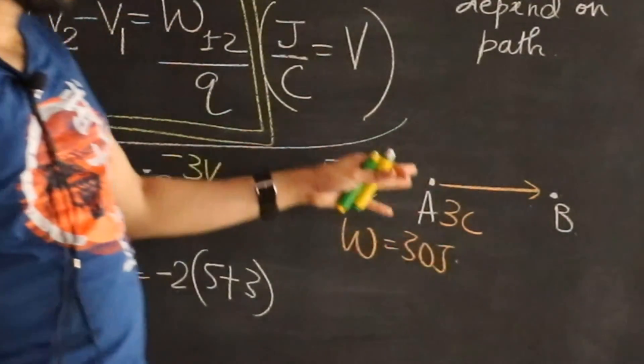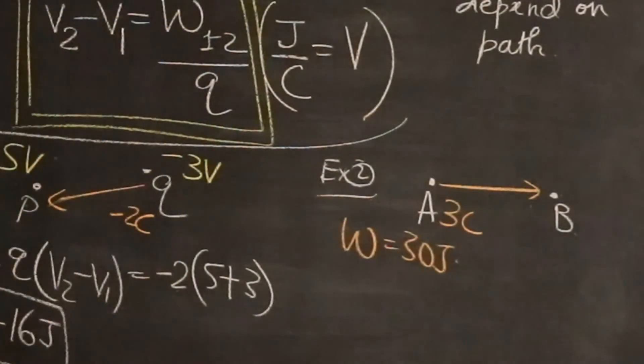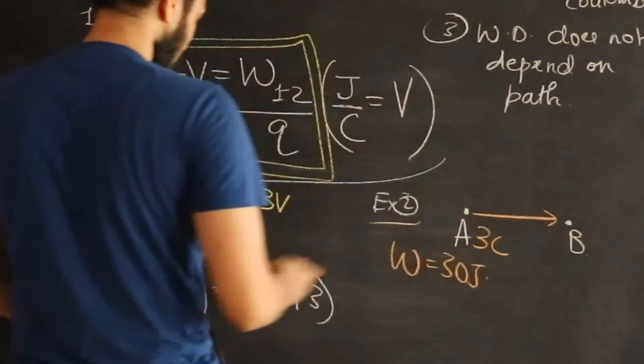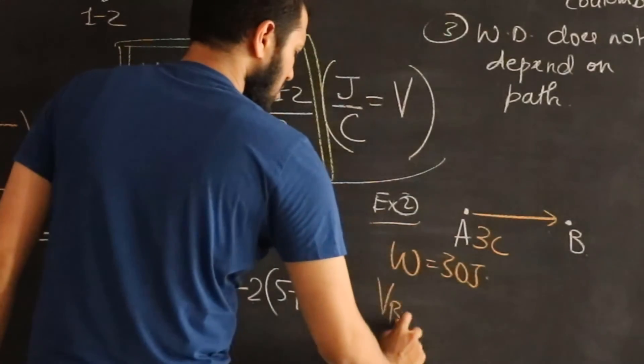I can now ask you what's the potential at point A and point B. We'll go backwards. Well we can now say, look potential difference, final minus initial, VB minus VA.